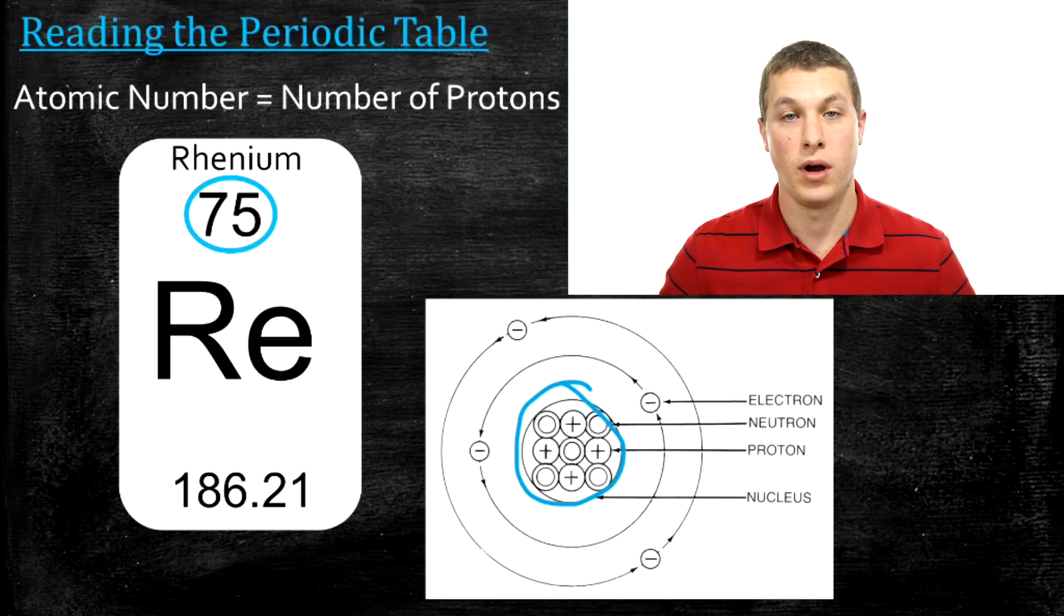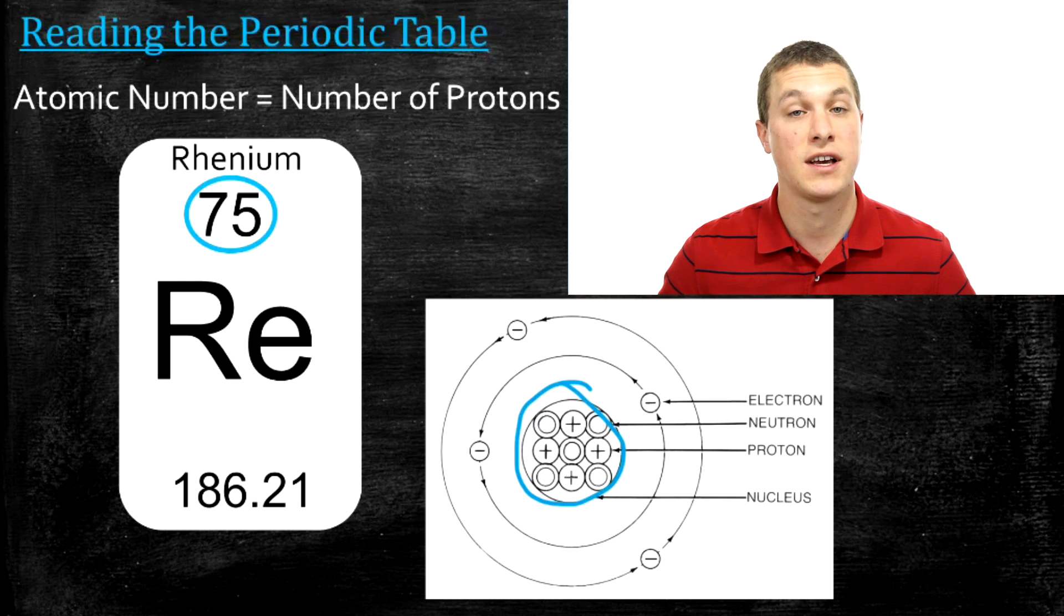So hydrogen has the atomic number one, that means it has one proton in the center of its nucleus. Rhenium is the atomic number 75, which means it has 75 protons in its nucleus.